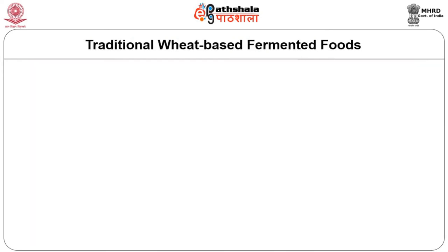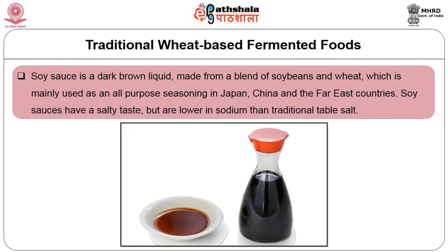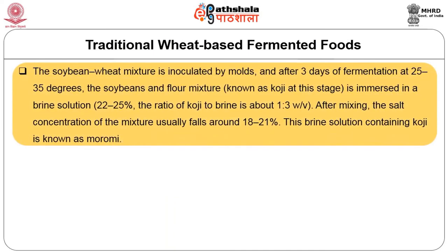Now we will see traditional wheat-based fermented foods. Soy sauce is a dark brown liquid made from a blend of soybeans and wheat, mainly used as an all-purpose seasoning in Japan, China and the Far East. Soy sauces have a salty taste but are lower in sodium than traditional table salt. The soybean-wheat mixture is inoculated by molds and after three days of fermentation at 25 to 35 degrees, the mixture known as koji is immersed in a brine solution containing 22 to 25 percent, with a ratio of koji to brine of about 1:3 weight by volume. After mixing, the salt concentration of the mixture usually falls around 18 to 21 percent. This brine solution containing koji is known as moromi.